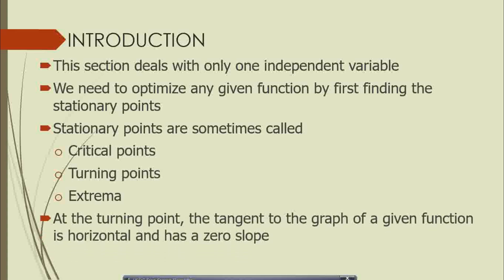At the turning point, the slope of a given function is zero, meaning that if you draw a tangent on any stationary point, the tangent will be horizontal. As you find the slope of a horizontal line, the slope will be zero. A stationary point is a point of rest — when you are moving either up a hill or down, you will reach a point of rest, and that point of rest is what we refer to as a stationary point.